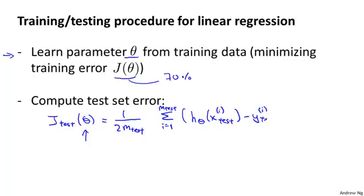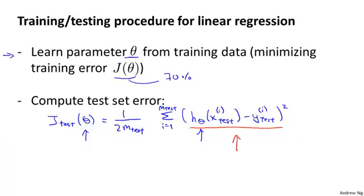It's pretty much what you'd expect: run every test example through your hypothesis with parameter theta and just measure the squared error that your hypothesis has on your m subscript test test examples. And of course, this is the definition of the test set error if we are using linear regression and using the squared error metric.